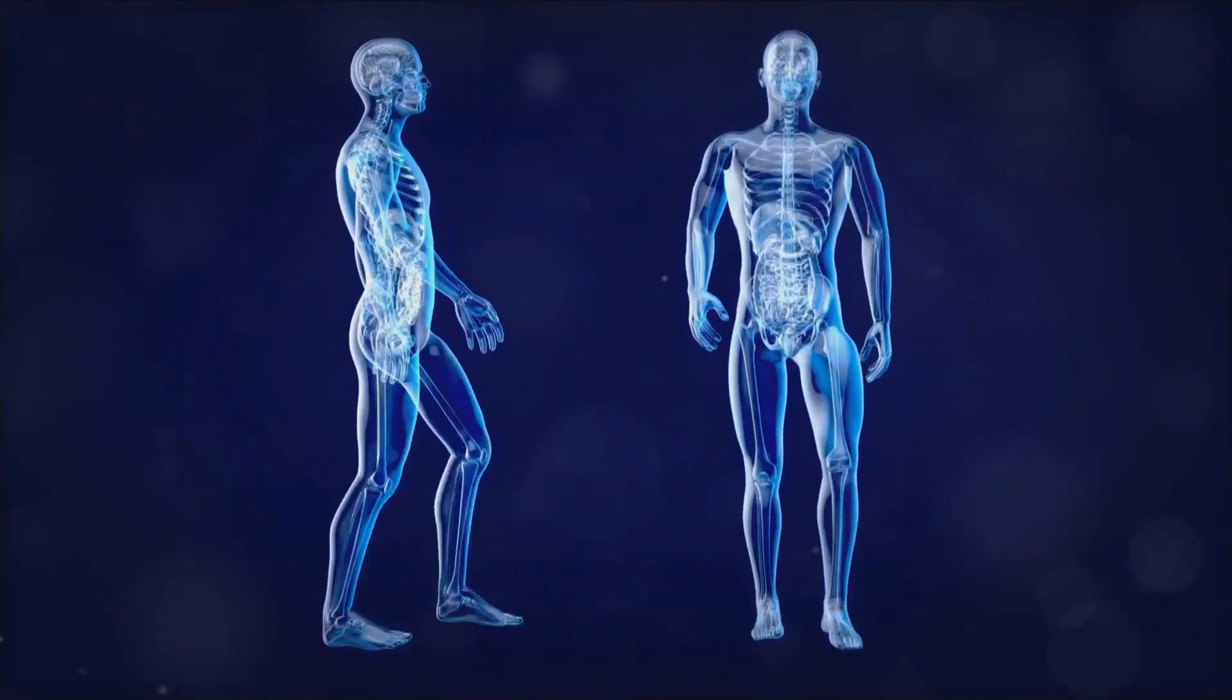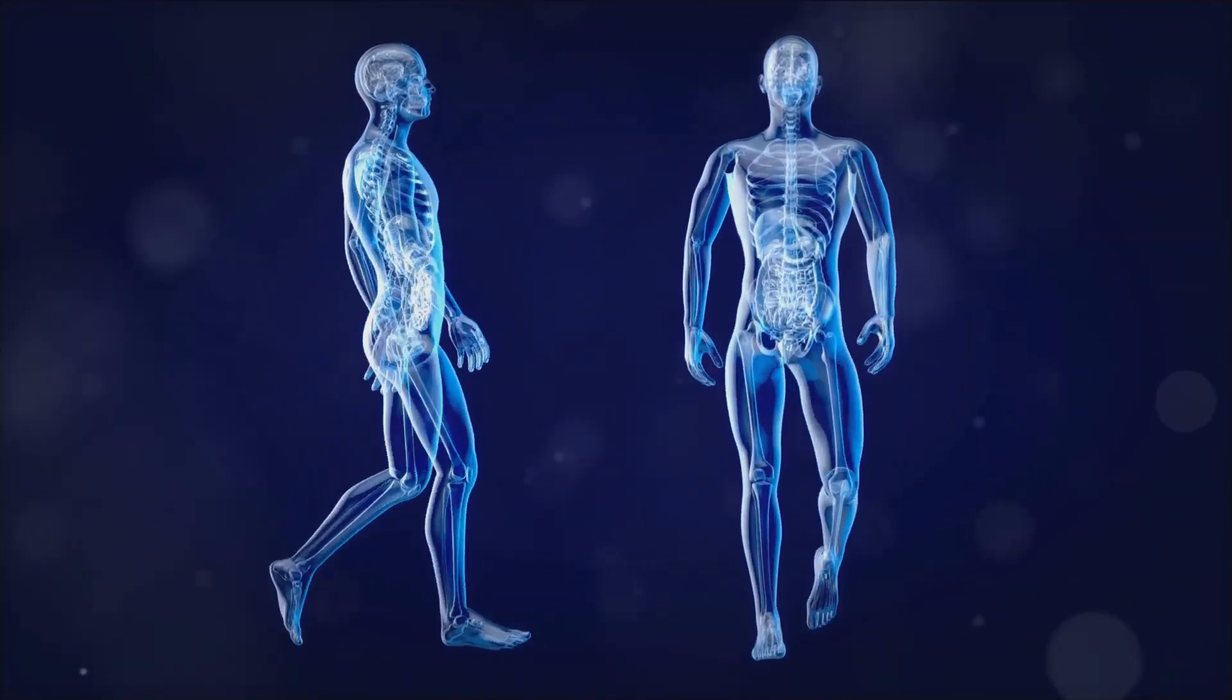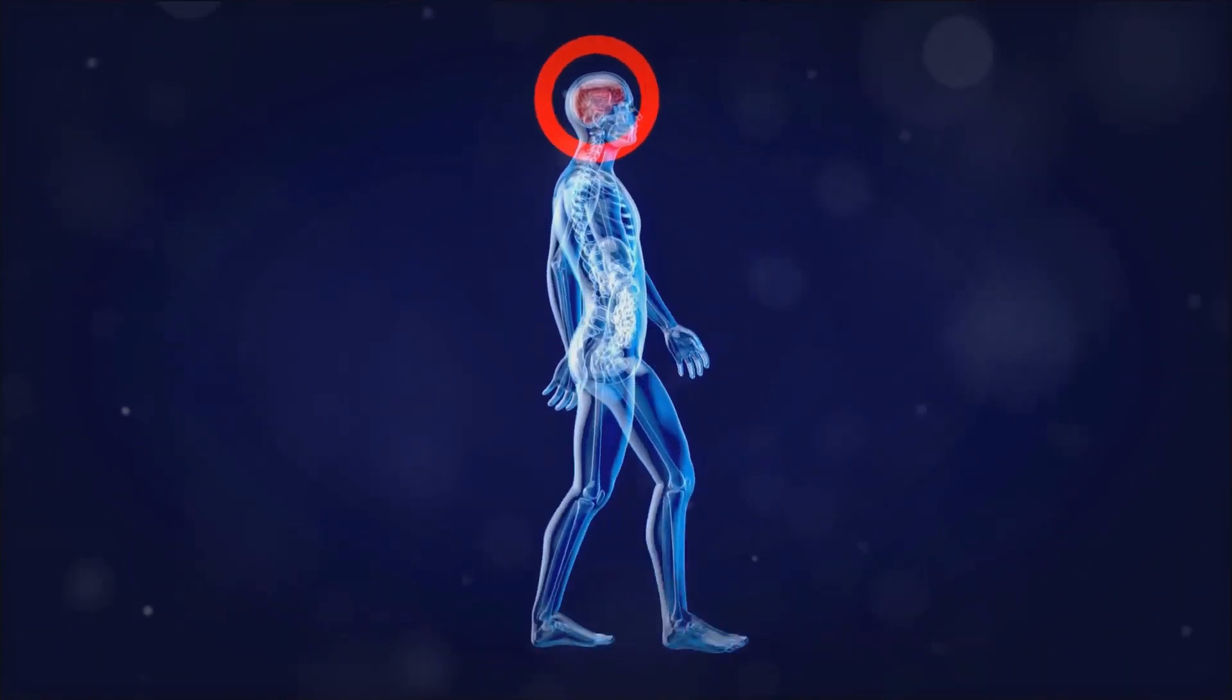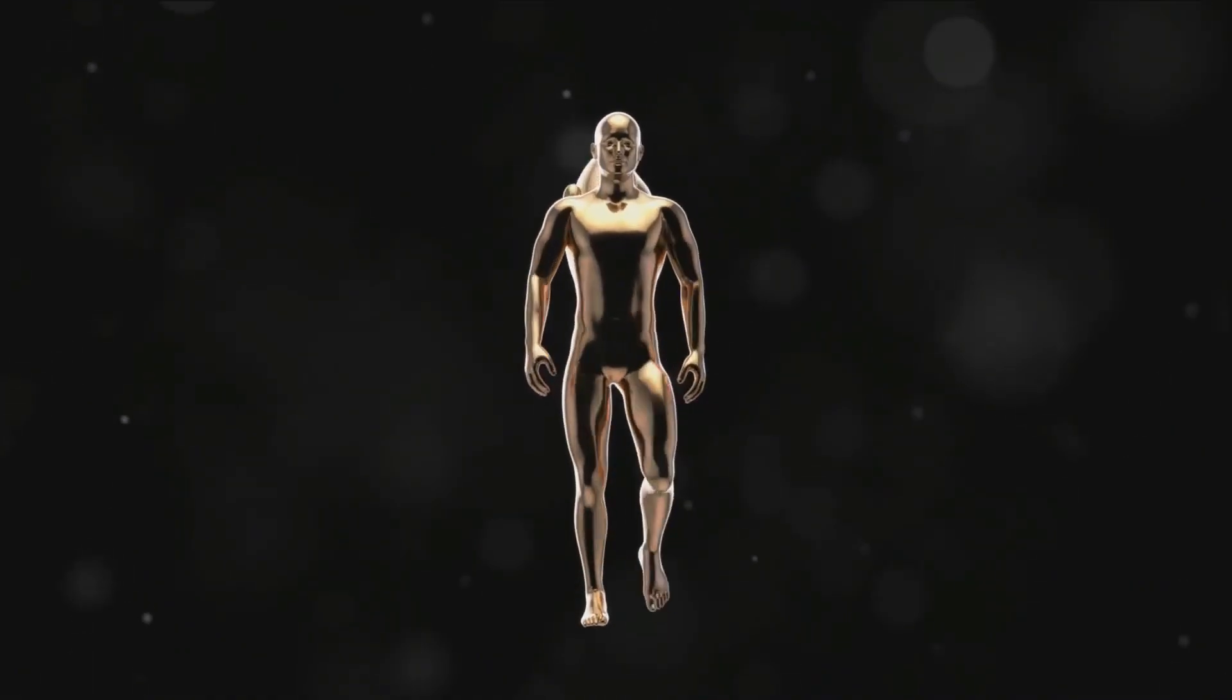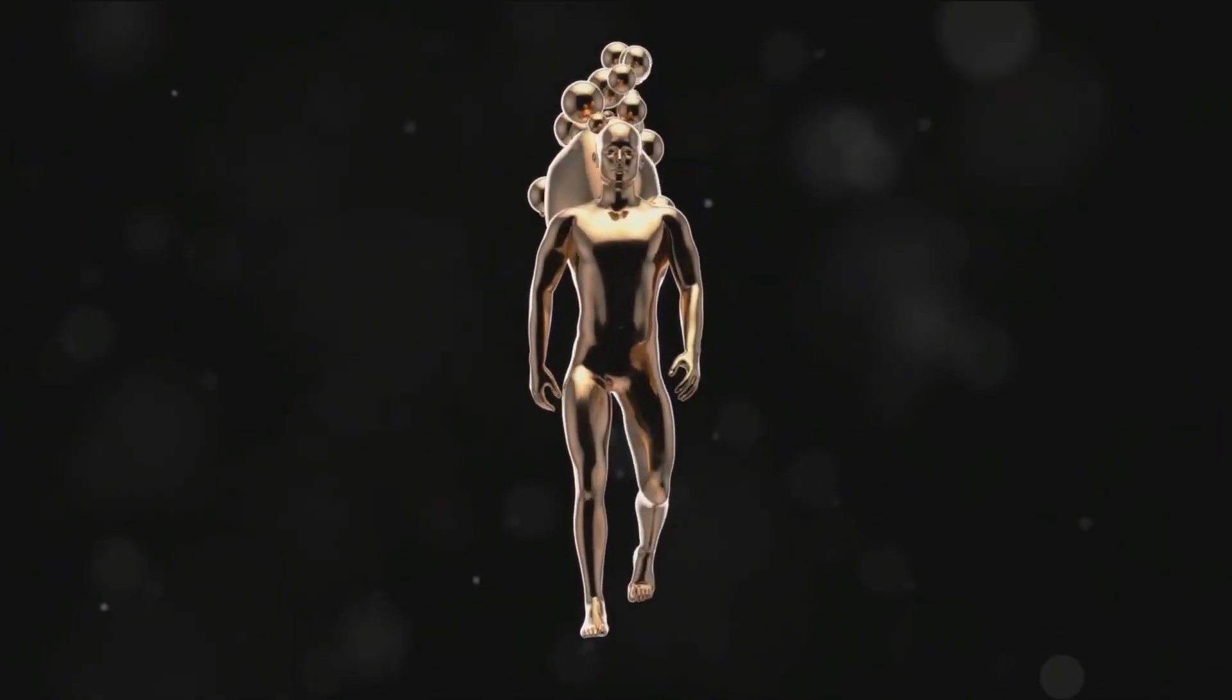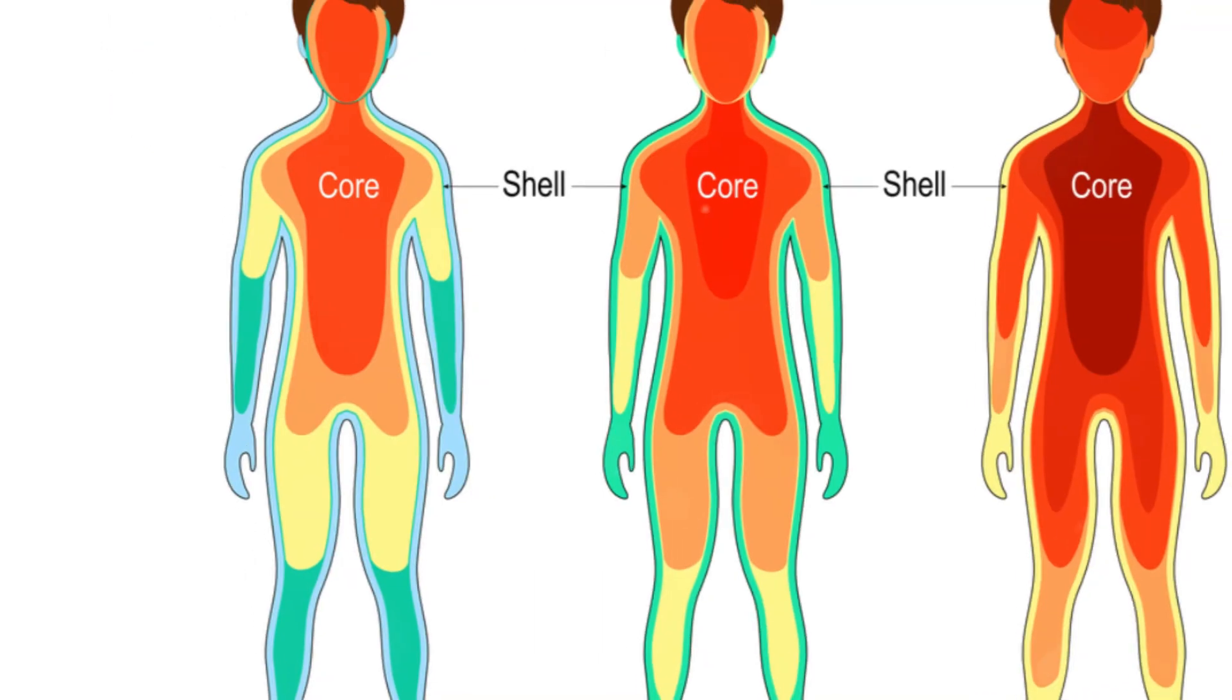So why is one testicle, usually the left, hanging a bit lower? It's all about survival. The testicles are like two peas in a pod, but they're not exactly identical. The slight difference in their positions helps prevent a collision when a man walks or runs. It's sort of like having a built-in natural shock absorber system. This way the testicles can coexist without constantly bumping into each other, which could lead to discomfort or even injury.